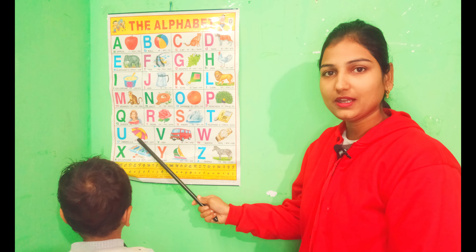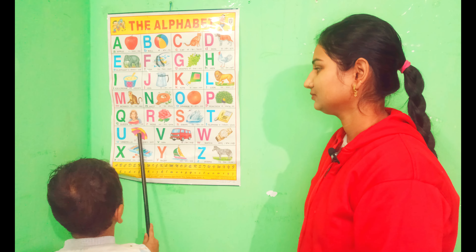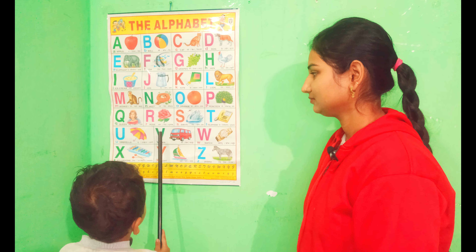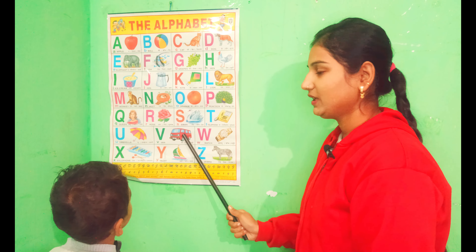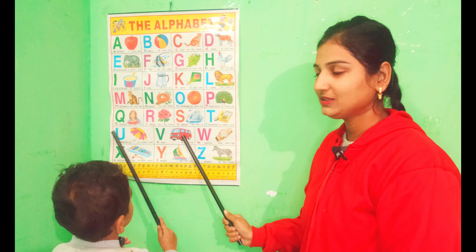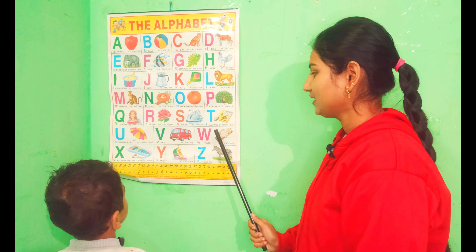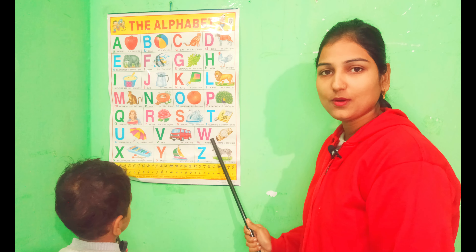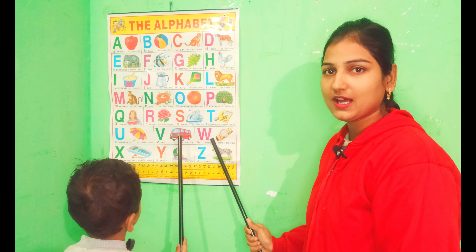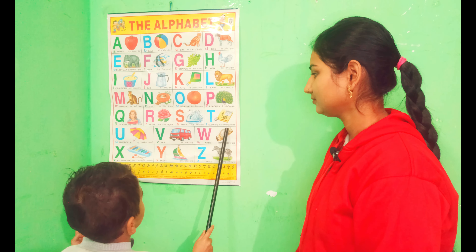U for umbrella, V for violin, W for wheel.